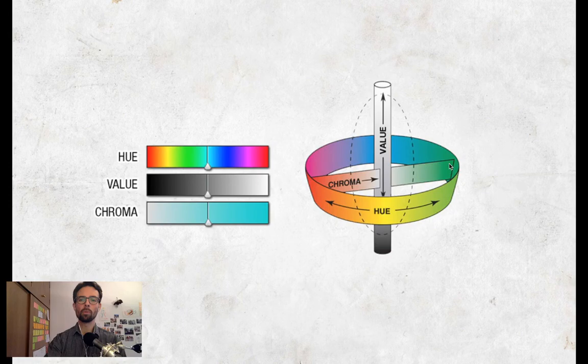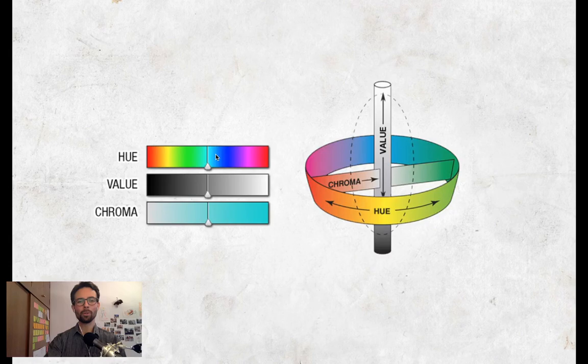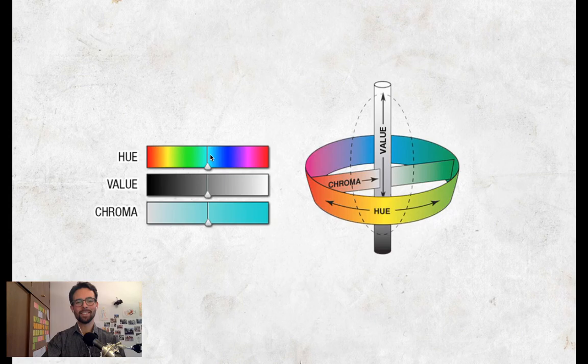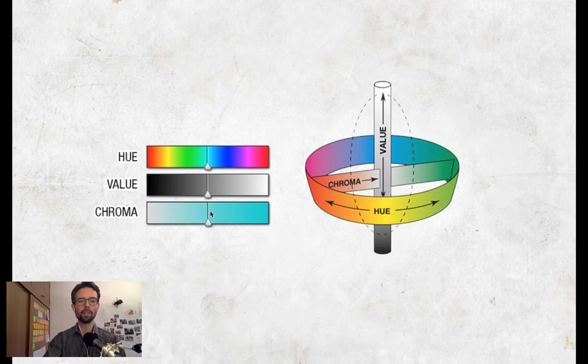Look at the clothes you're wearing — your shirt or pants. You can find the hue. Blue jeans would be a blue hue. My shirt is tricky because it's very gray, but it feels bluish and warmish. Hue first — find the hue of what you're wearing. Then value: how light or dark is it? Is it middle gray, closer to black, or closer to white? And then chroma — my shirt is very, very low chroma.